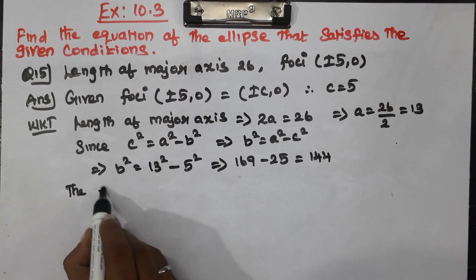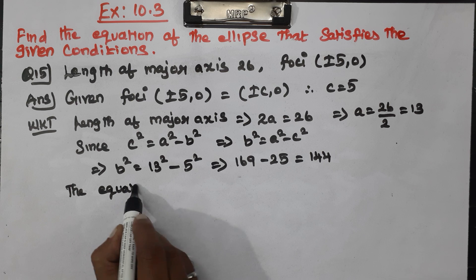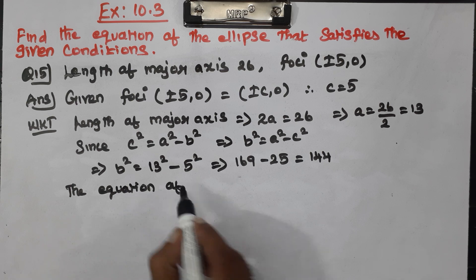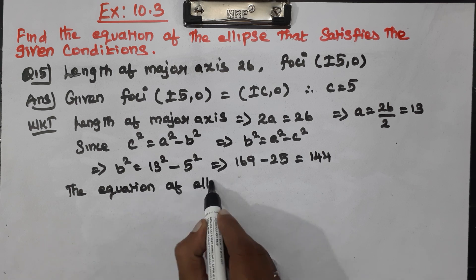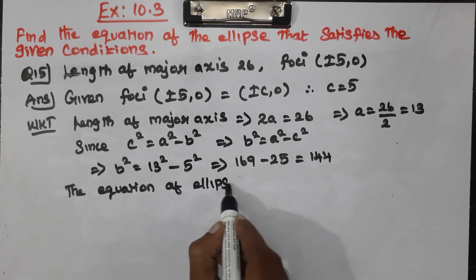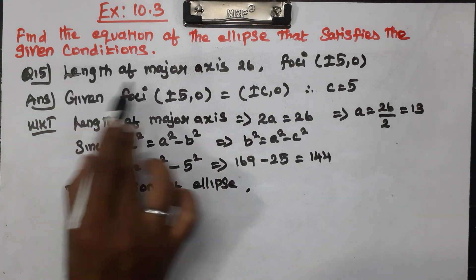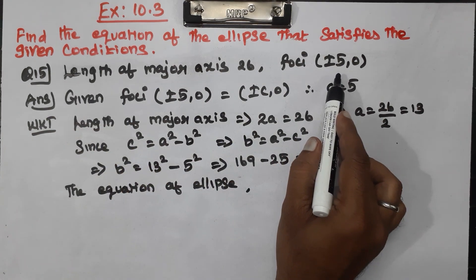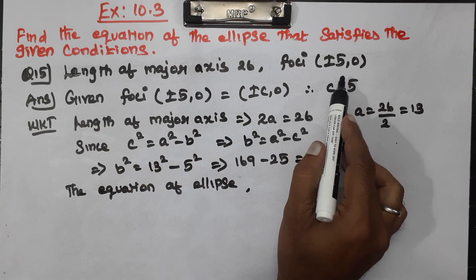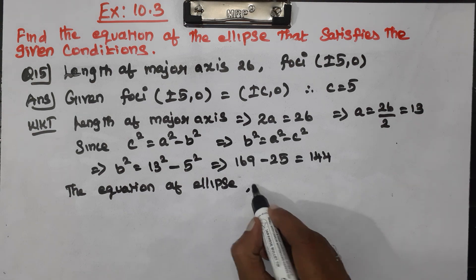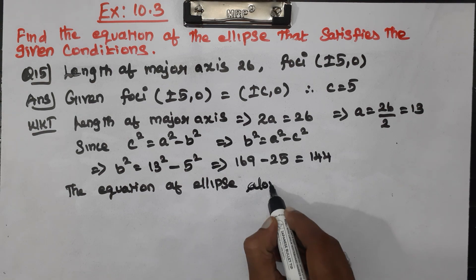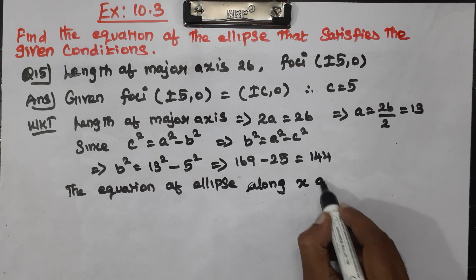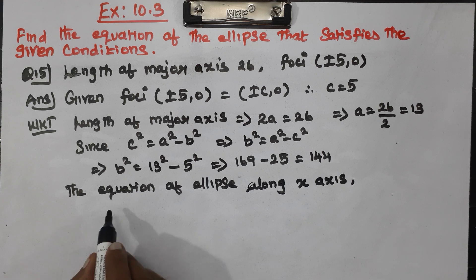Finally, the equation of the ellipse. Since the major axis is along the x-axis, the equation of the ellipse along the x-axis is x squared by a squared plus y squared by b squared equals 1.